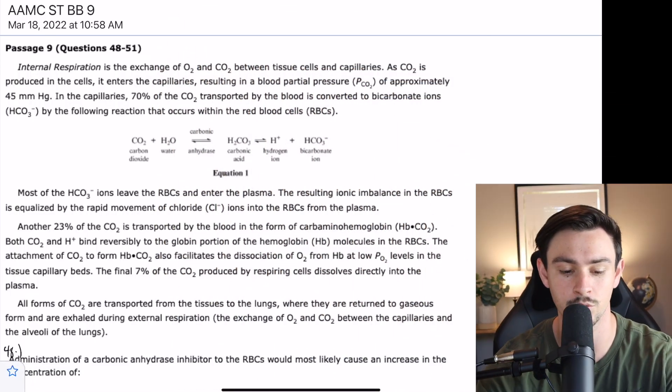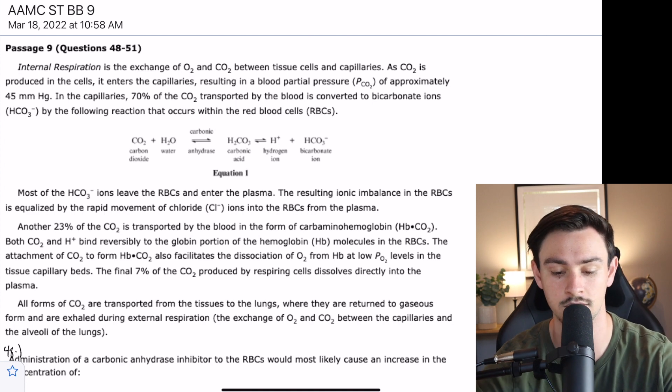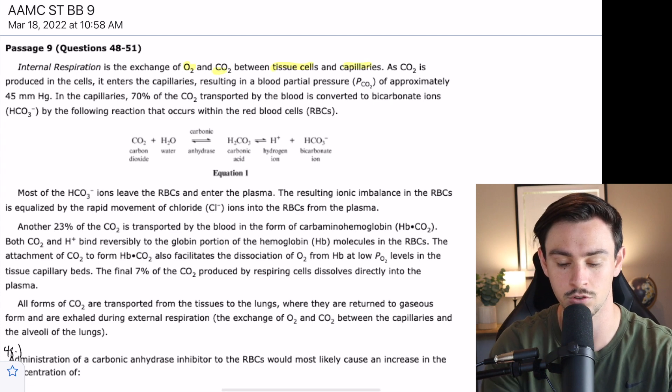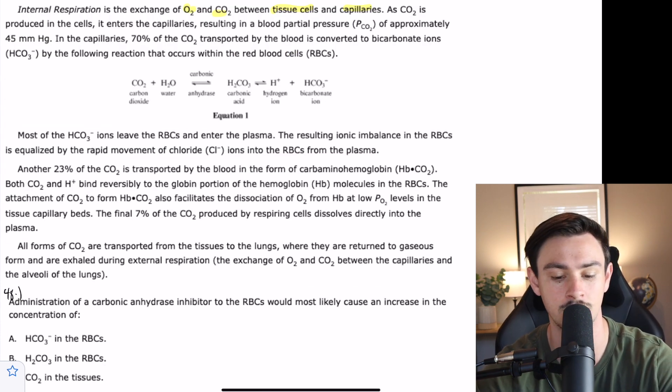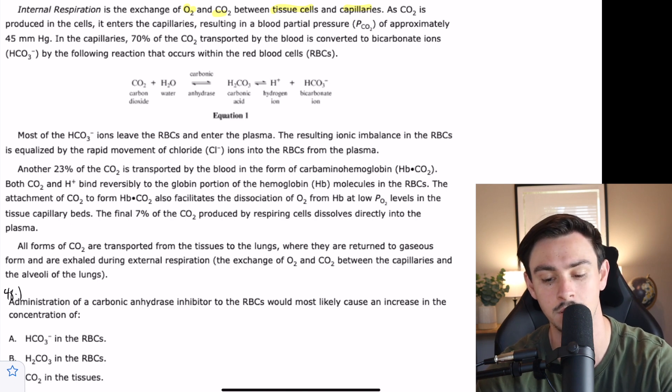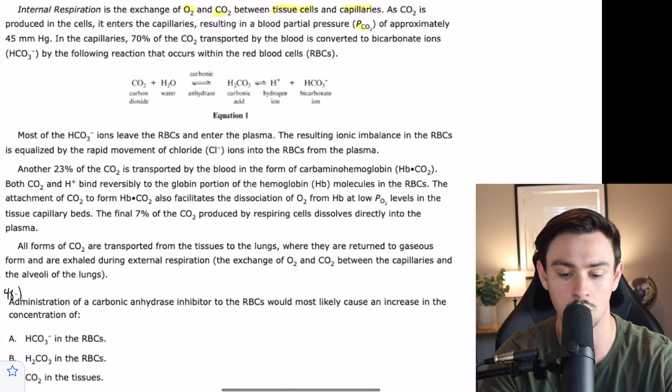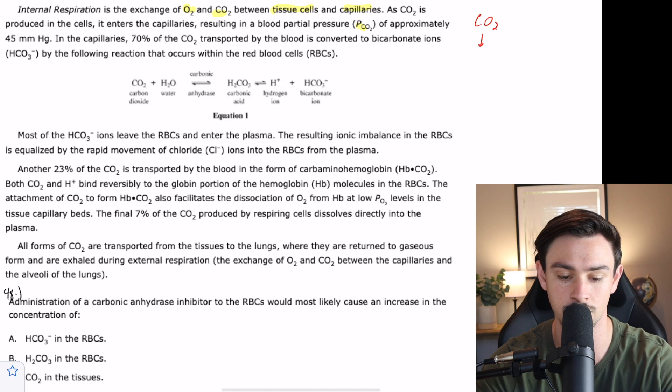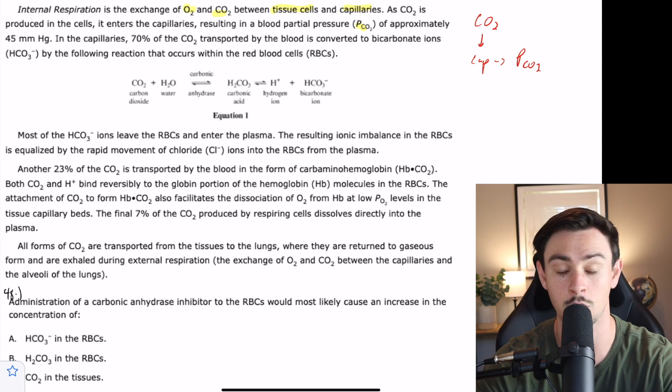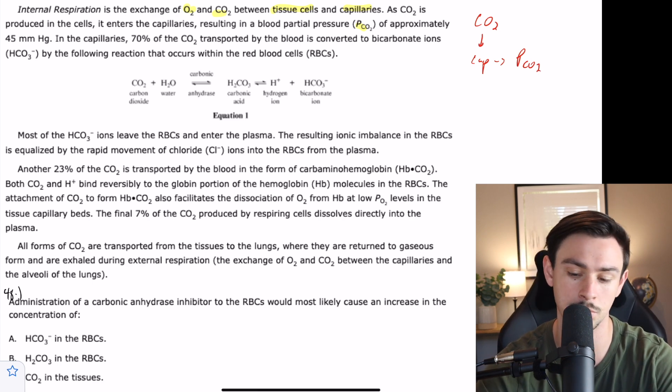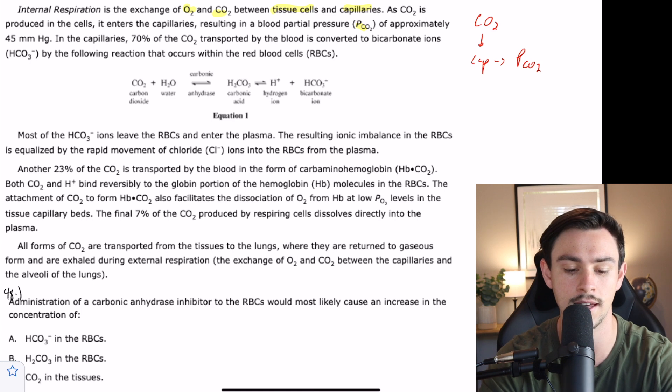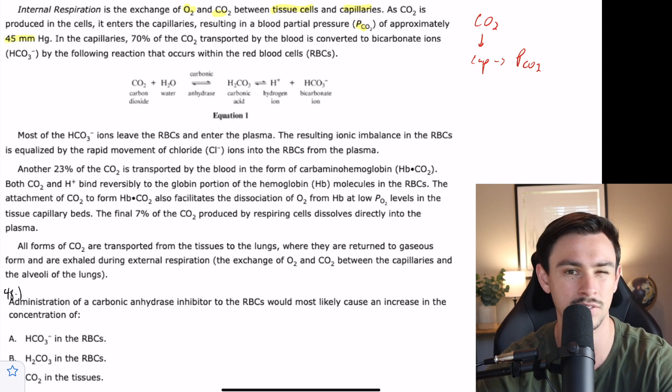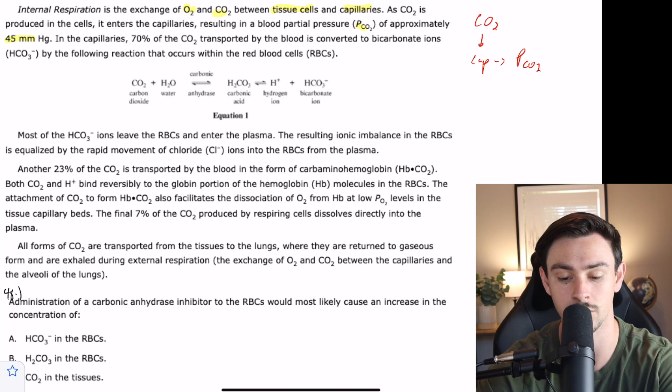Flow charting this passage out, internal respiration is the exchange of oxygen and carbon dioxide between tissue cells and capillaries. As CO2 is produced in the cells, it enters the capillaries resulting in a blood partial pressure of CO2 of approximately 45 millimeters mercury. Because it's a number, it's pretty easy to find. I usually just don't even do anything with them.